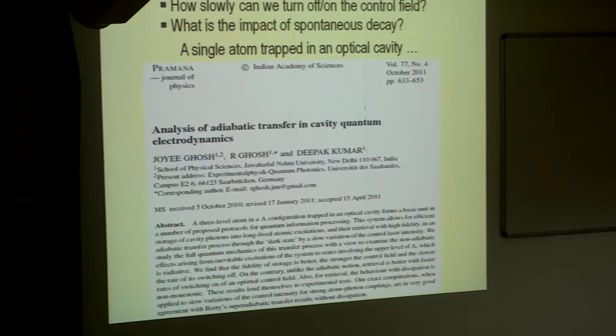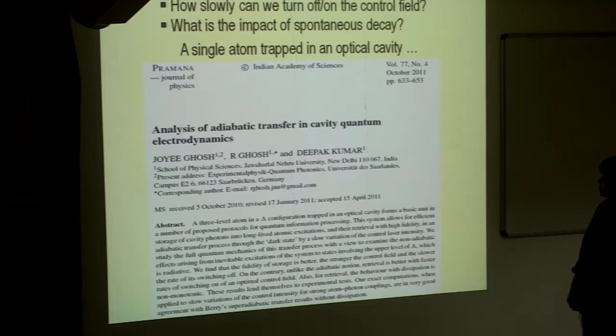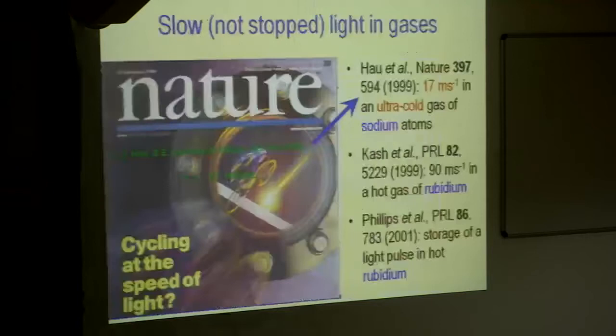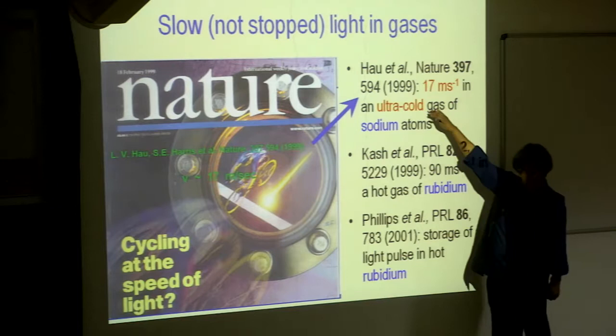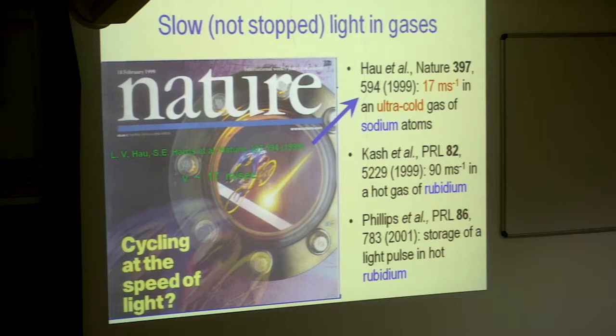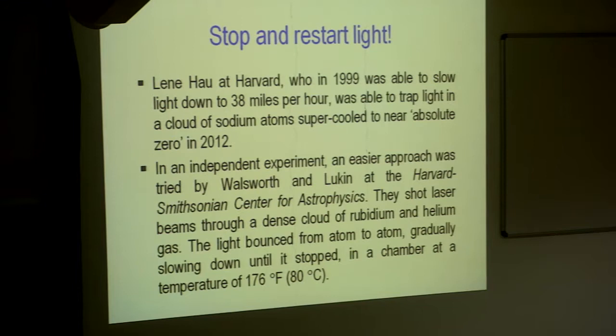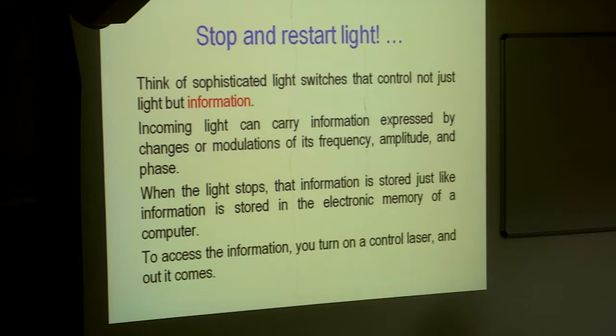There are many, many issues in here, how slowly can you turn off on the control field, what is the impact of spontaneous decay. Starting in 1999, Nature Cover had this, that in an ultra cold gas, this was really the coldest spot in the universe kind of a gas of sodium atoms. People showed 17 meters per second of group velocity. What I am talking about sophisticated light switches that control not just light, but information.